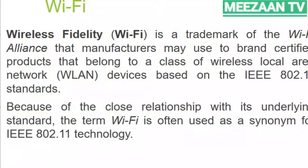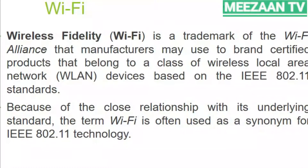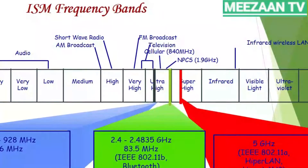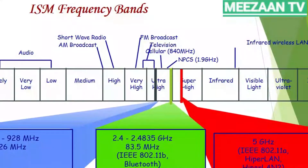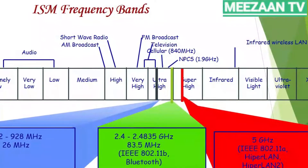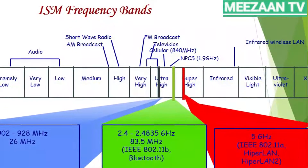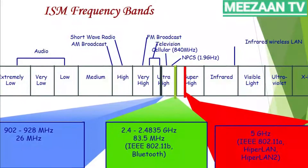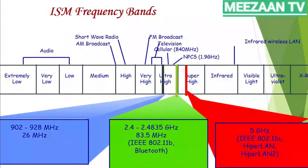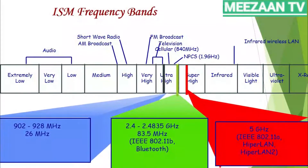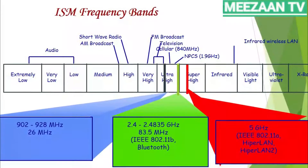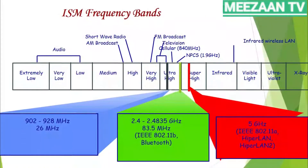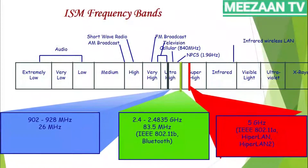Because of the close relationship with its underlying standard, the term Wi-Fi is often used as a synonym for IEEE 802.11 technologies. Wireless LAN operates in ISM bands. The ISM band is pre-licensed and is available at no cost everywhere in the world. The ISM band is divided into three different bands.